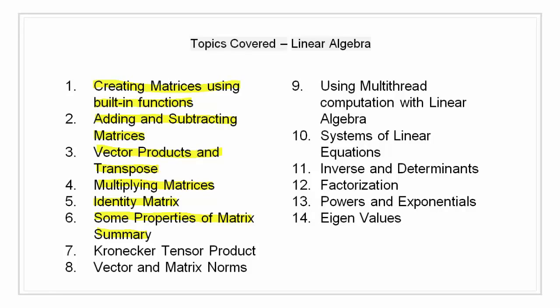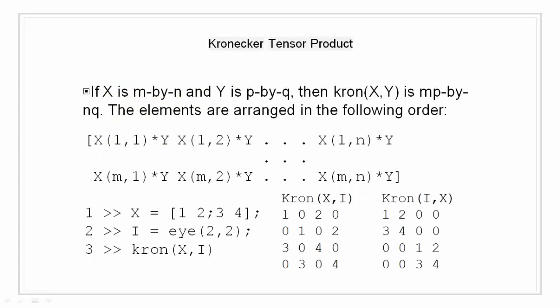Now moving on — Kronecker tensor product. The Kronecker product, that is kron(X, Y), of two matrices is the larger matrix formed from all the possible products of elements of X with those of Y.